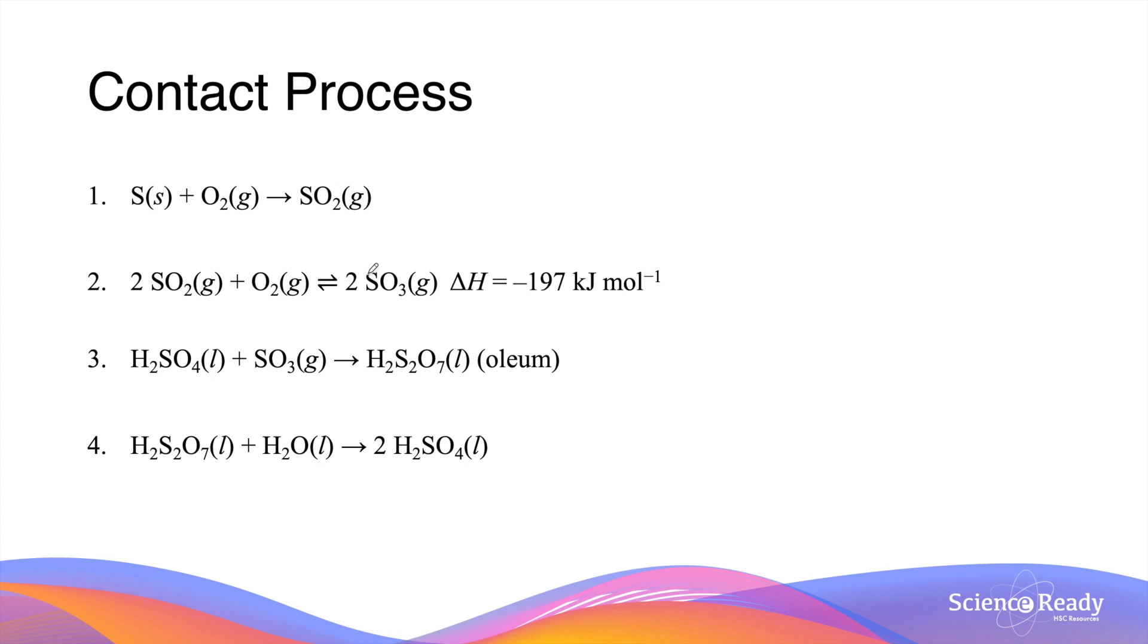The contact process is not as straightforward as the Haber process because it is divided into four steps. The first step is the combination between sulfur and oxygen to form sulfur dioxide gas. This sulfur dioxide gas further reacts with oxygen gas in a reversible reaction to produce sulfur trioxide.